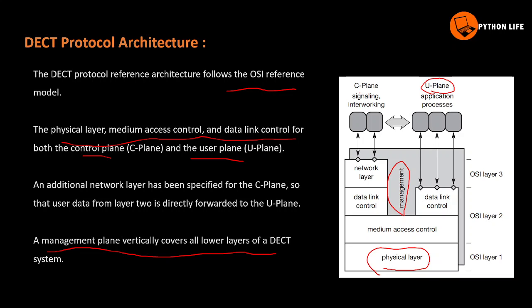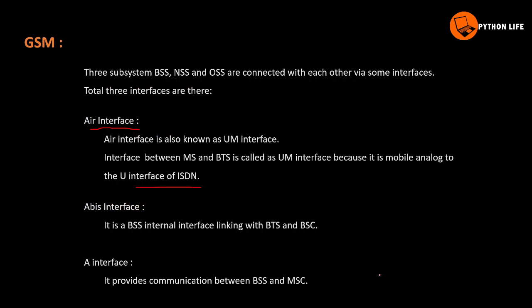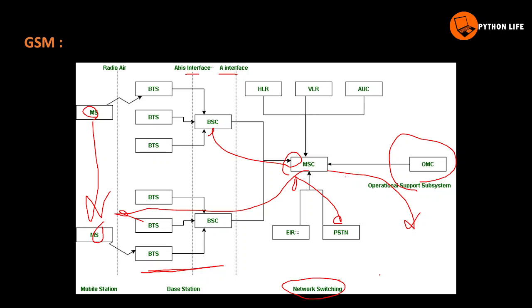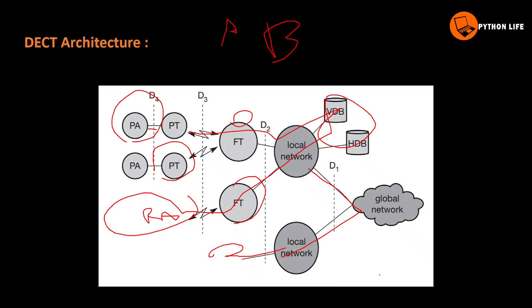This is about DECT and GSM - both have communication purposes. But GSM is long range and DECT is short range. The architecture is similar, though DECT is somewhat simpler. In DECT, HDB and VDB serve as the home and visitor location registers.